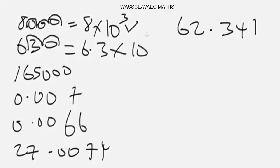Now for this one, start from here: 1, 2, 3, 4, 5. So it's going to be 1.65 times 10 to the power 5, since we moved five times.